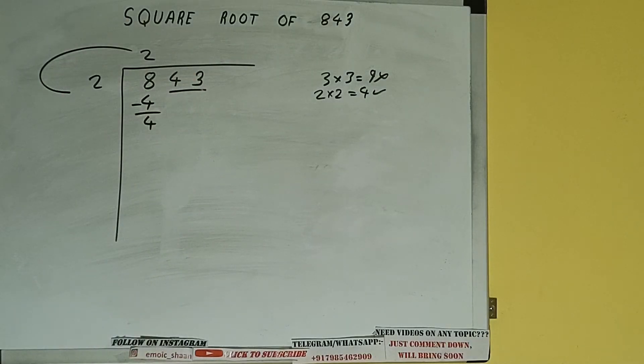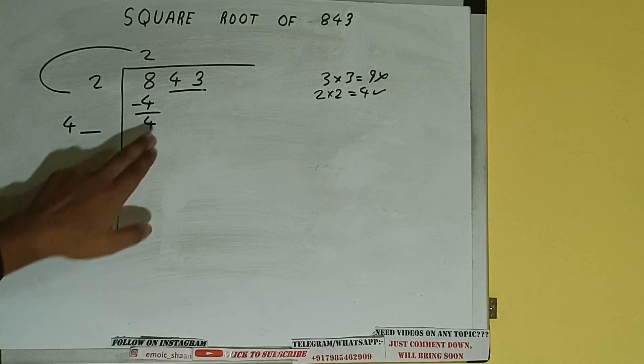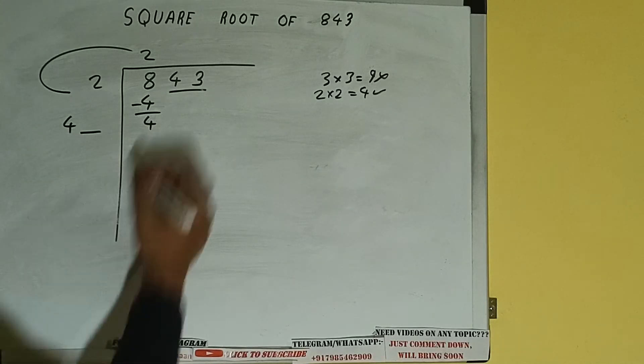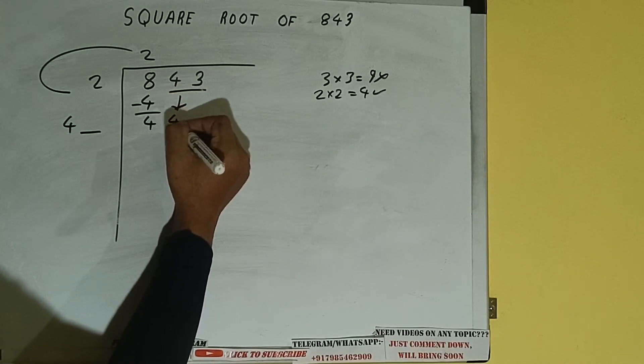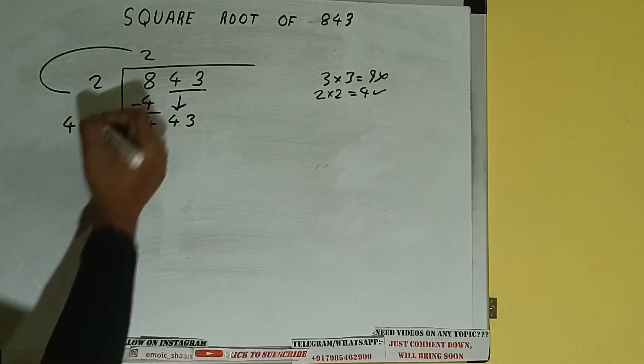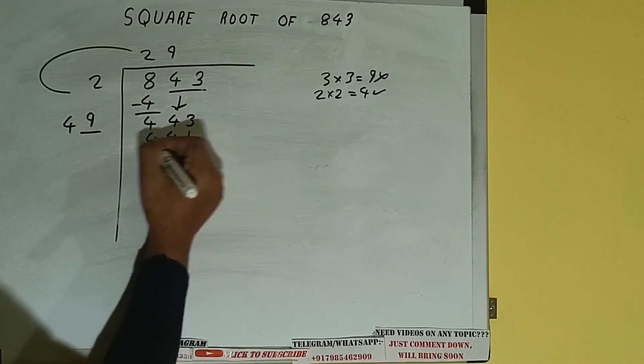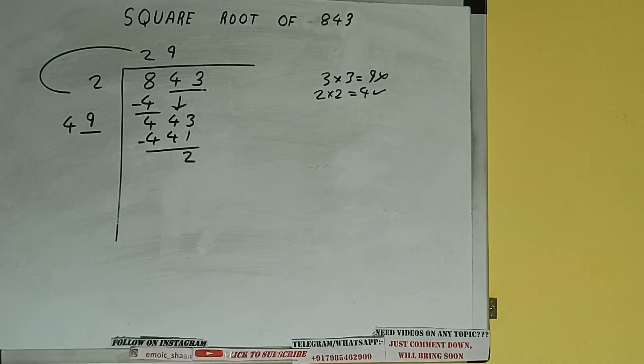Now we did 2 into 2 so add both. So 2 plus 2 will be 4. Write it here and keep a digit extra. And this number we need to make it big. So bring the next pair down and it will be 443. Now whatever number we write here we have to write here also. So if we write 9 here and 9 here it will be 441. Subtract, 2 will be left.